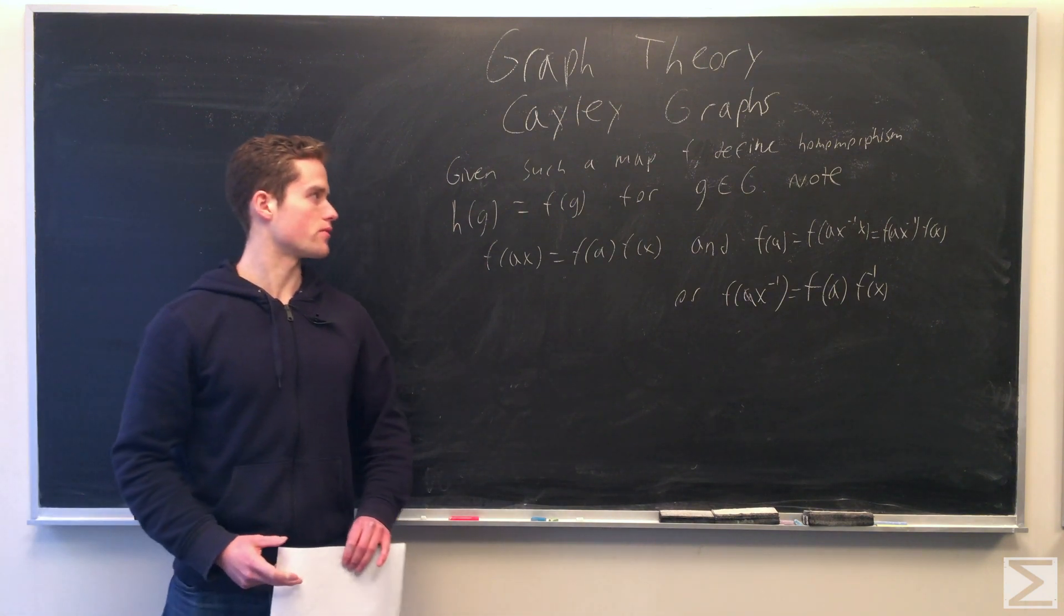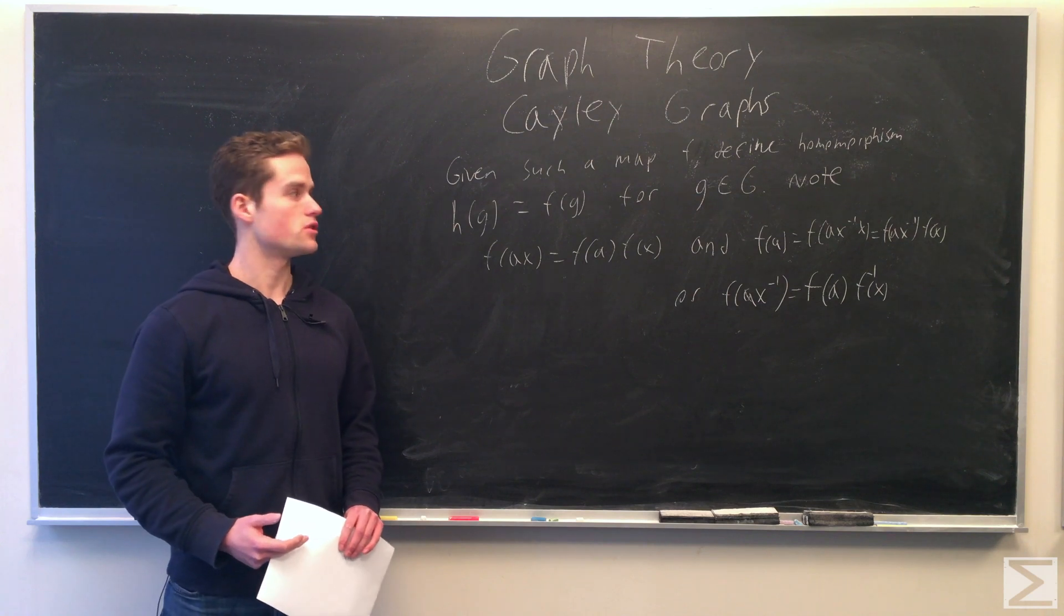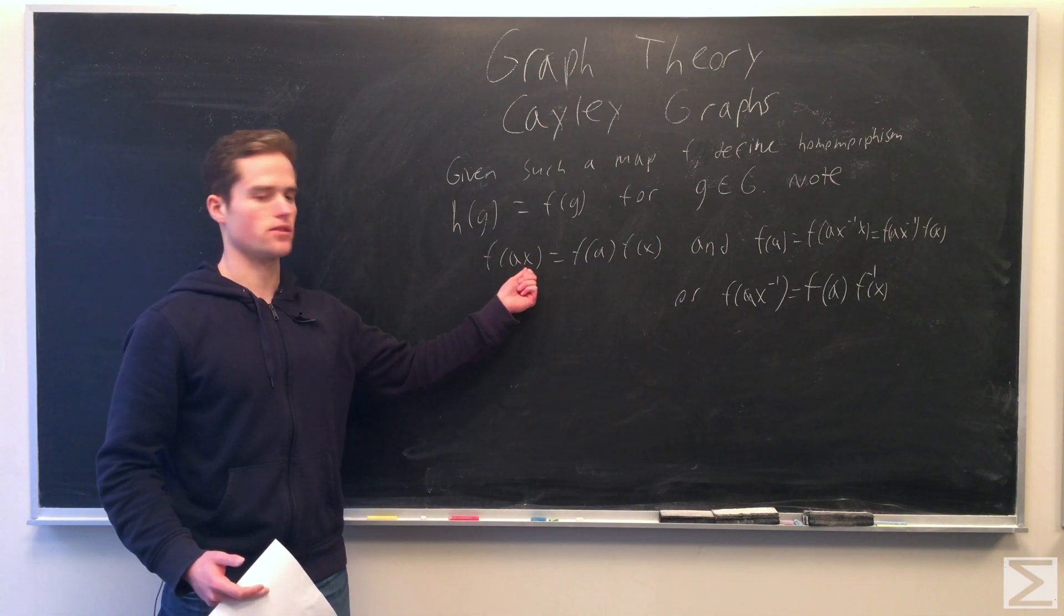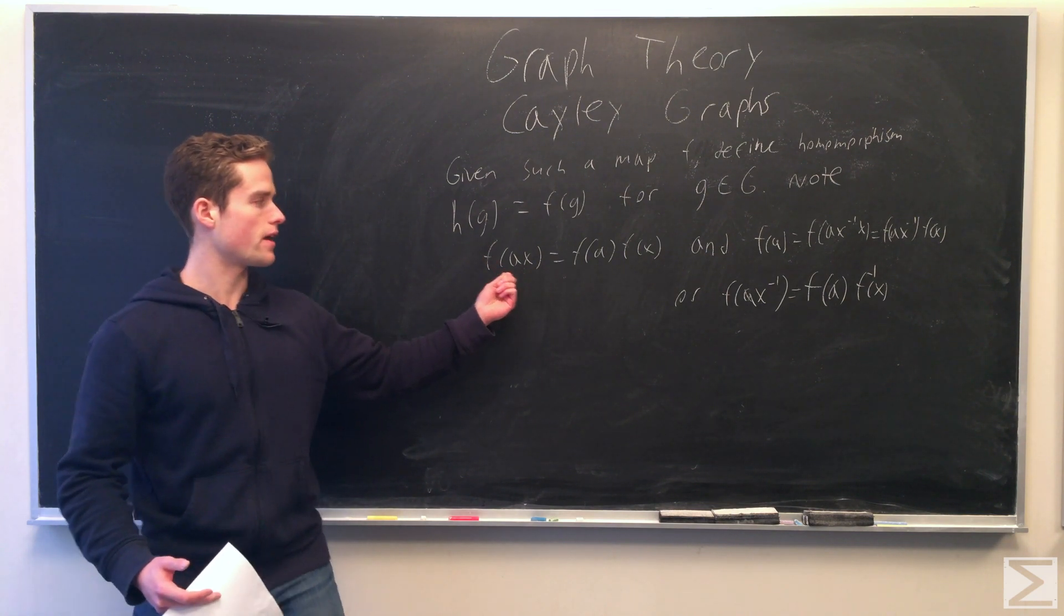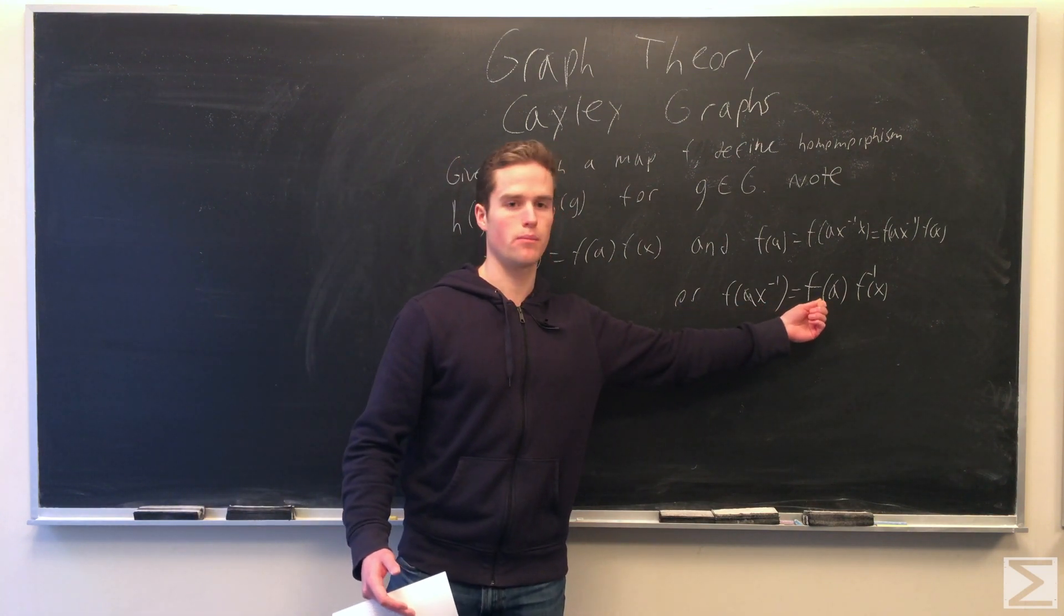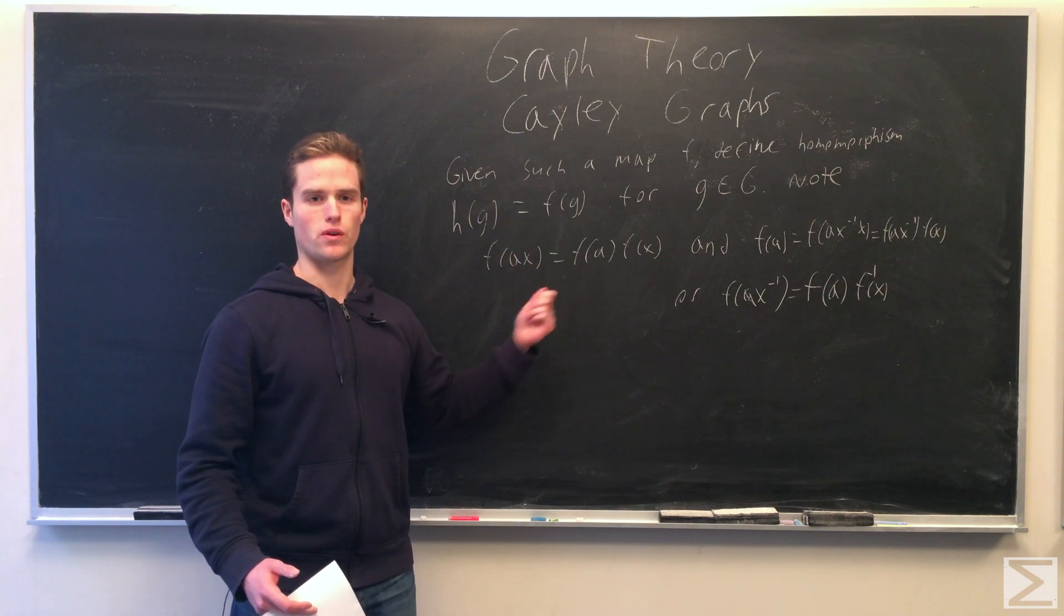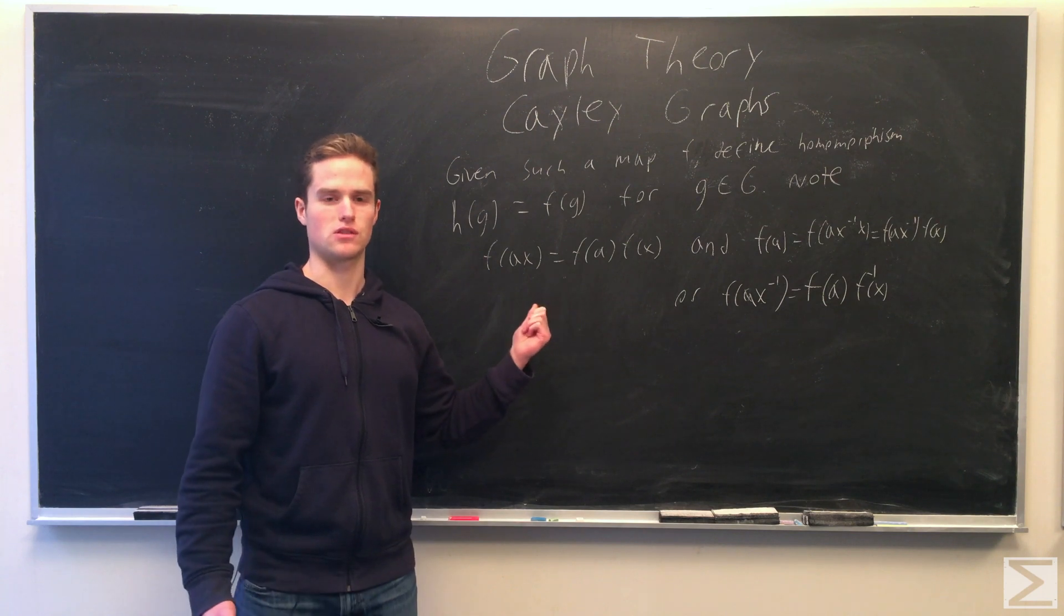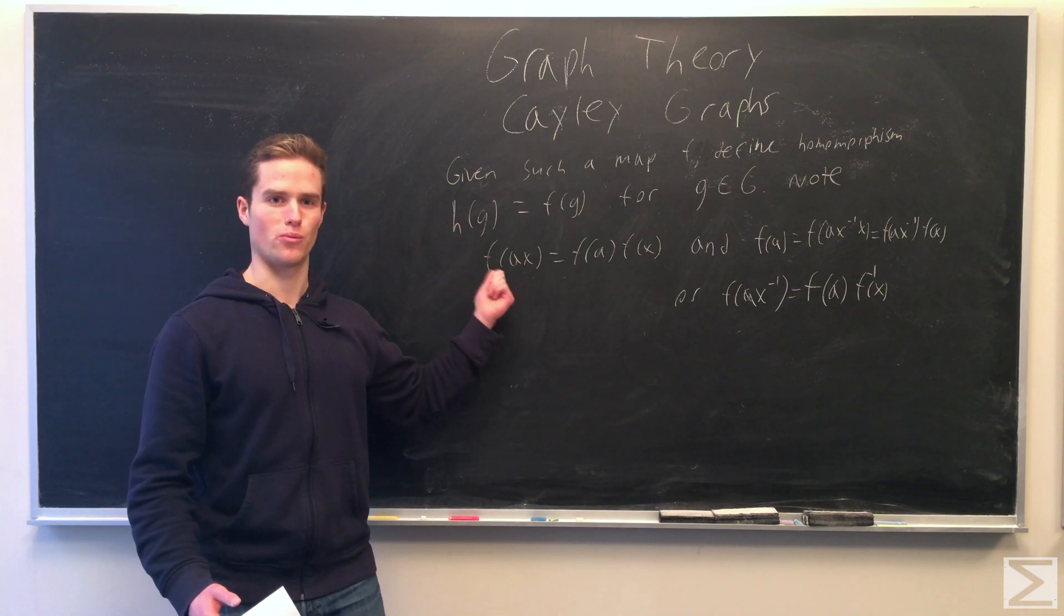So if we're given such a map F, we can define a homomorphism H of G equals F of G for any G in our group. We want that F of A, X equals F of A, F of X, and F of A, X inverse equals F of A, F inverse X. Since X is a generating set, any F of A, B, B can be broken up into elements of X. These will be enough for us to establish that H of anything will be a homomorphism.